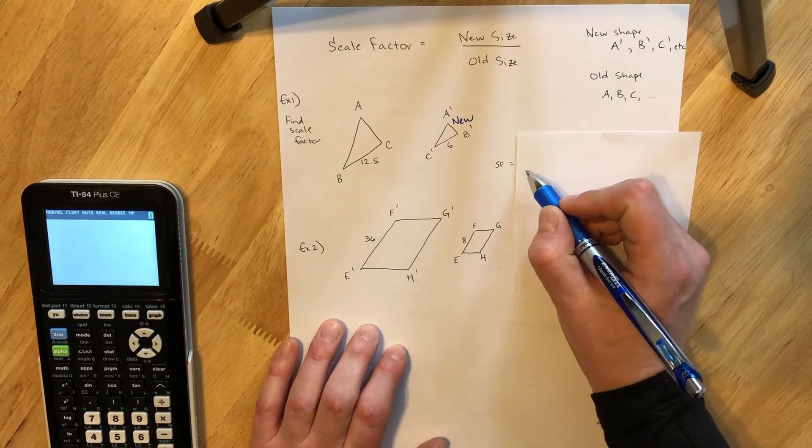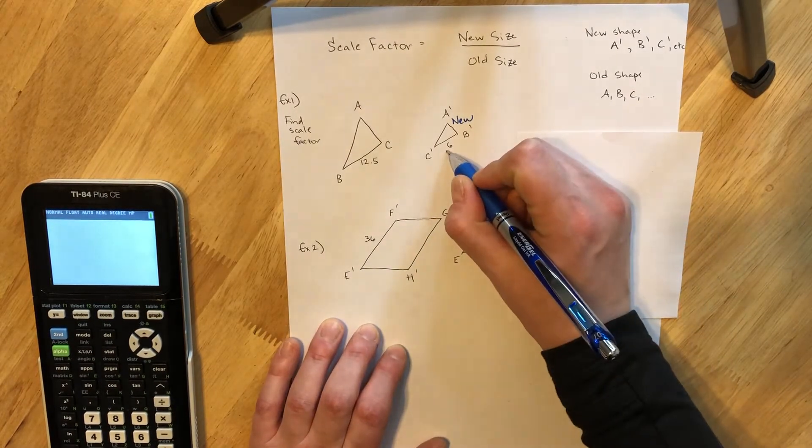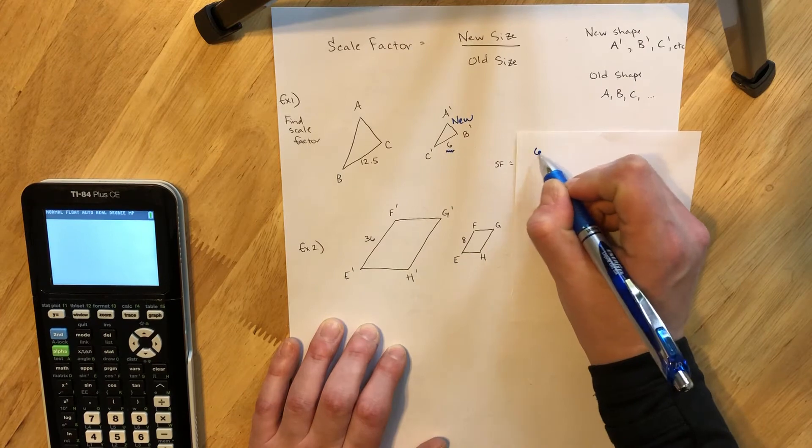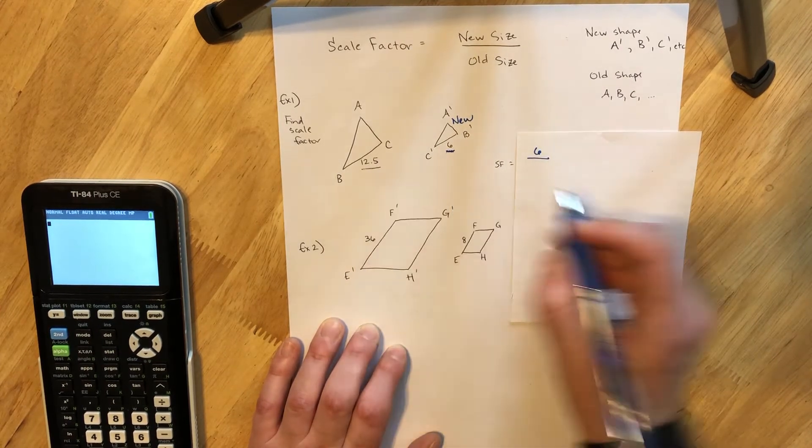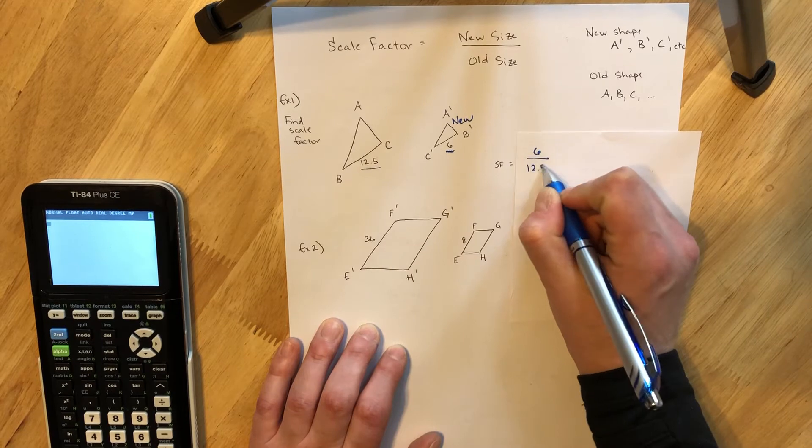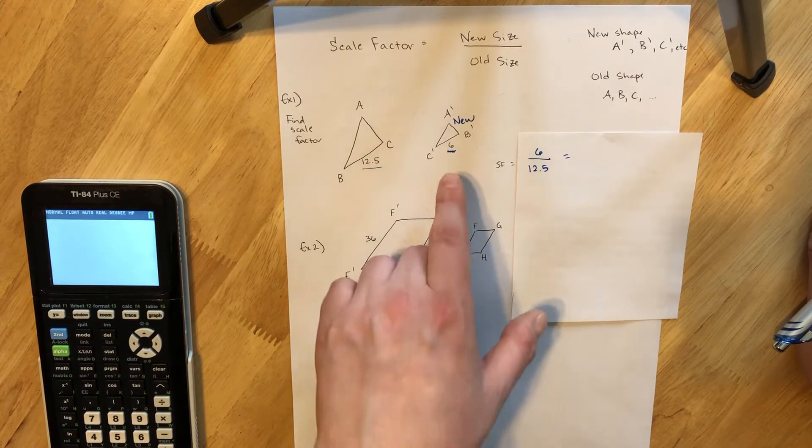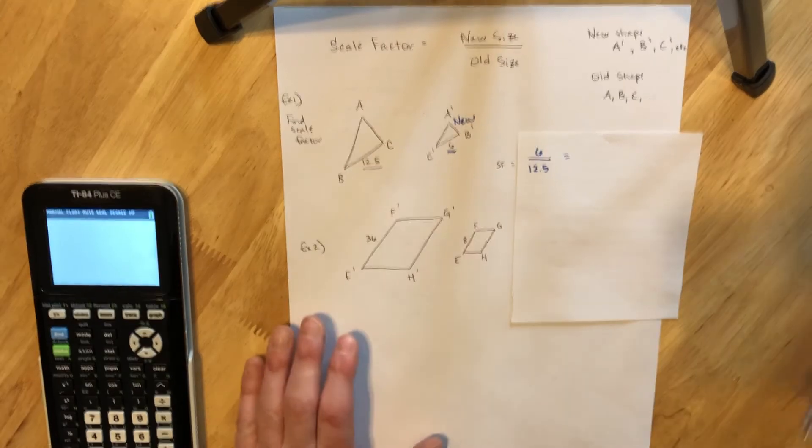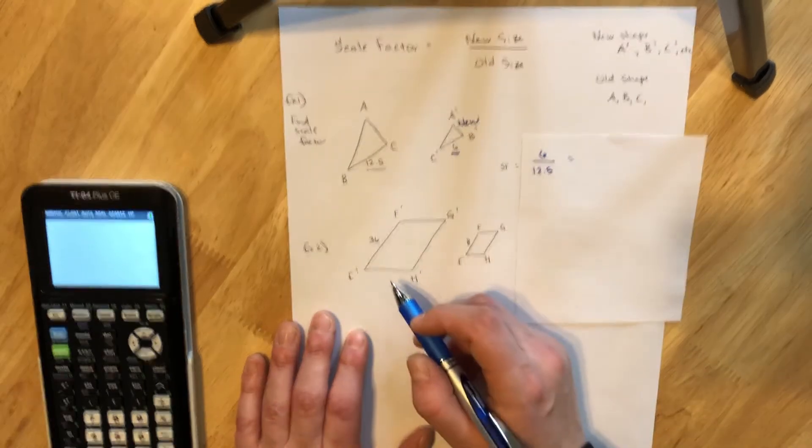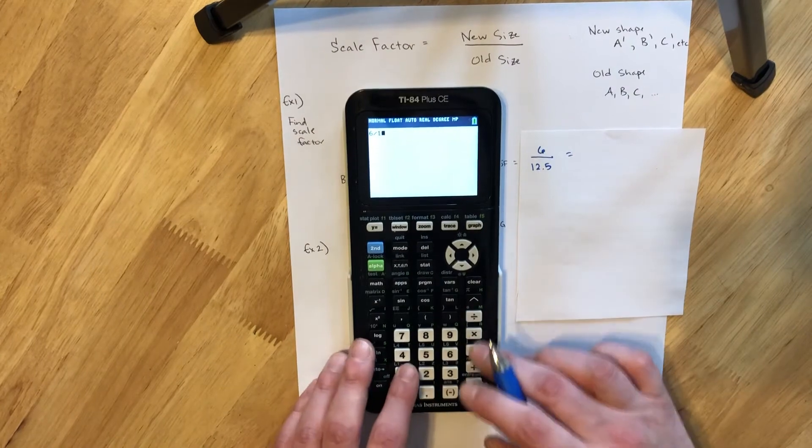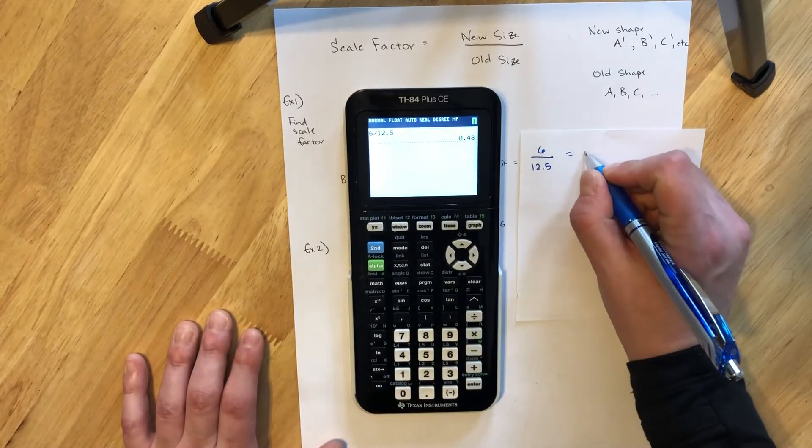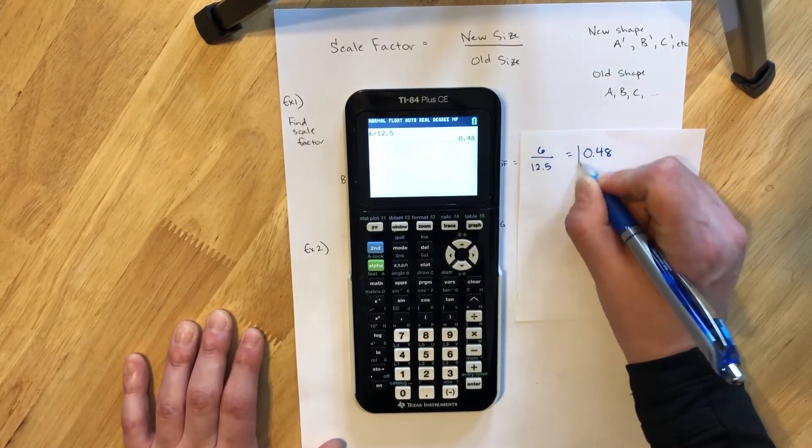So here in example one, our scale factor we're going to put the side length of 6 on the top for the new shape, and that corresponds to 12.5 on the old shape. So that same length from B prime to C prime. And so we'll take 6 divided by 12.5 and that's 0.48.